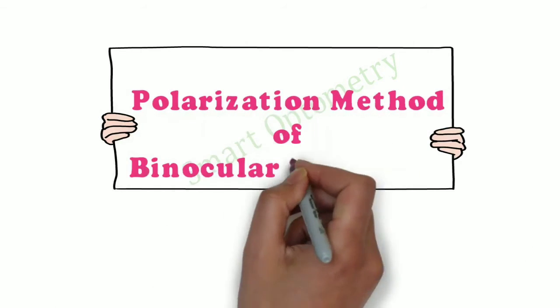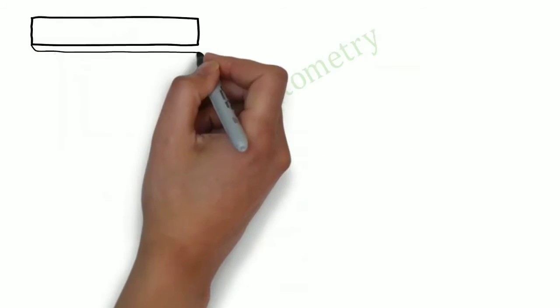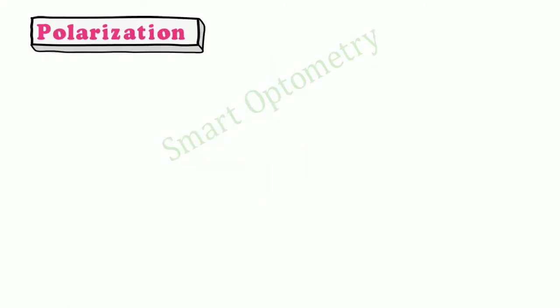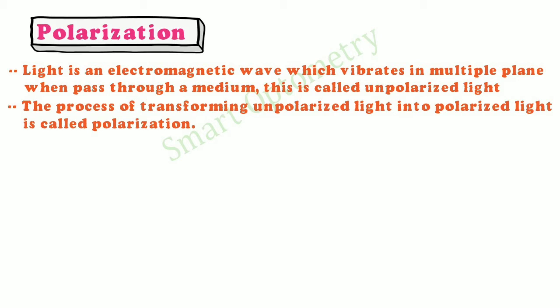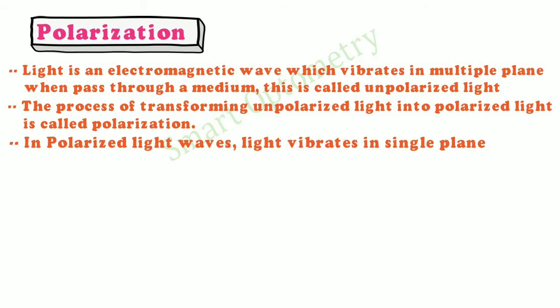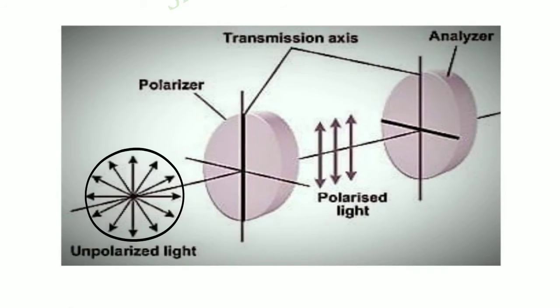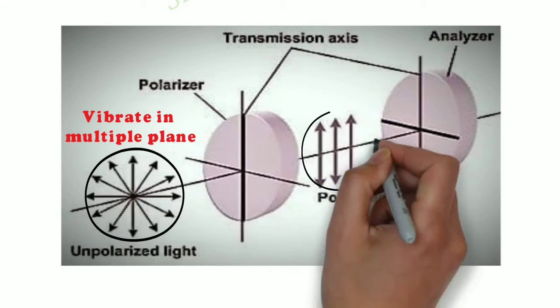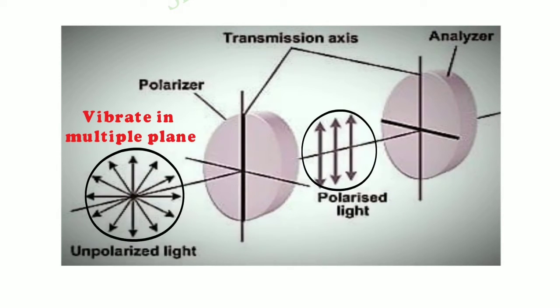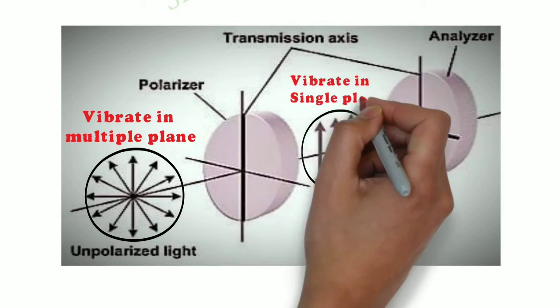Polarization method of binocular refraction. Light is an electromagnetic wave which vibrates in multiple planes when passed through a medium — this is called unpolarized light. The process of transforming unpolarized light into polarized light is called polarization. In polarized light waves, light vibrates in a single plane. In this figure, unpolarized light vibrates in multiple planes, and after passing through the polarizer, polarized light vibrates in a single plane.